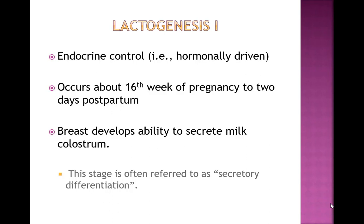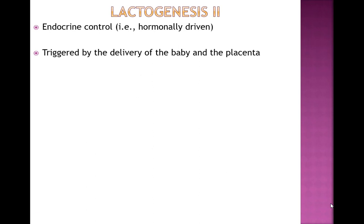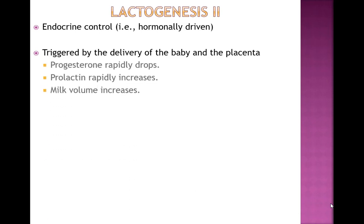The next phase is lactogenesis 2, also controlled by the endocrine system and hormonally driven — it doesn't matter if the mom is choosing to breastfeed or not. It is triggered by the delivery of the baby and the placenta. Once the baby is born and the placenta is delivered, hormonal changes signal that mature milk production should begin: progesterone rapidly drops and prolactin increases rapidly, causing milk volume to increase.